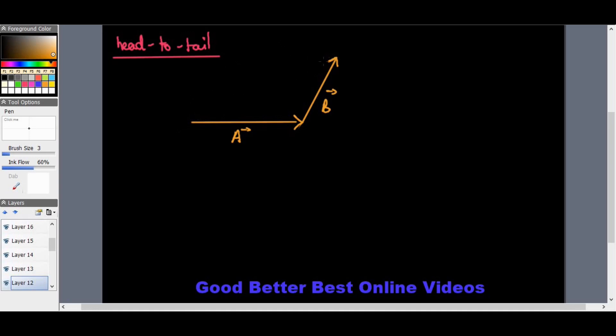I start drawing the tail of my next arrow at the head of the first one. The head of the first is touching the tail of the second. Then the resultant would be this entire line, the resultant vector of A plus B.